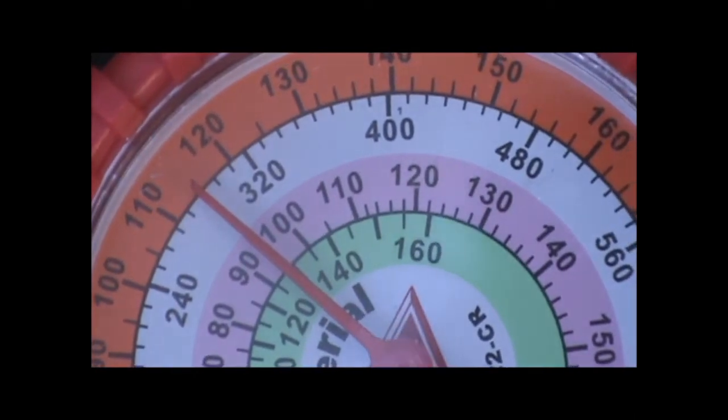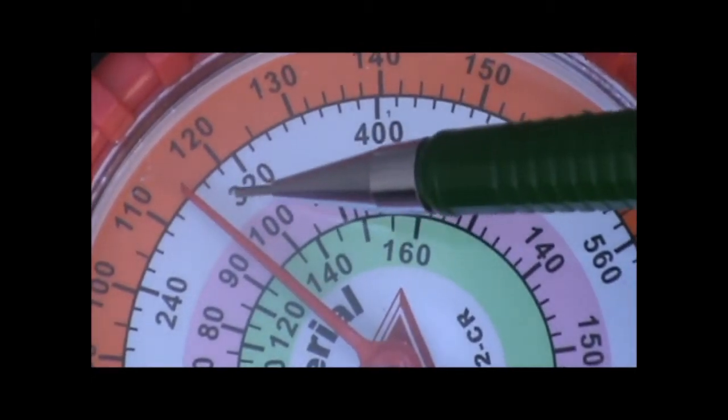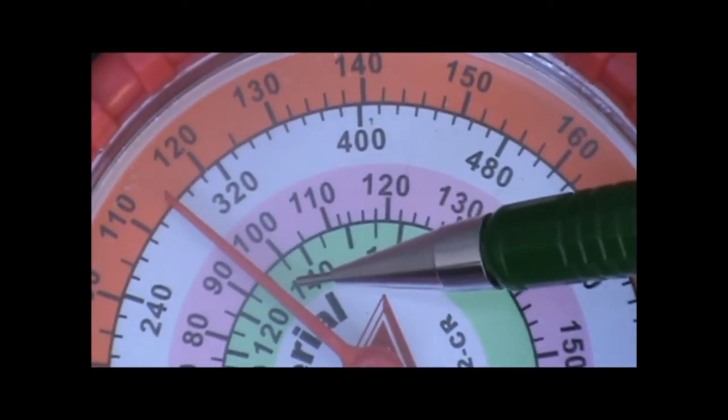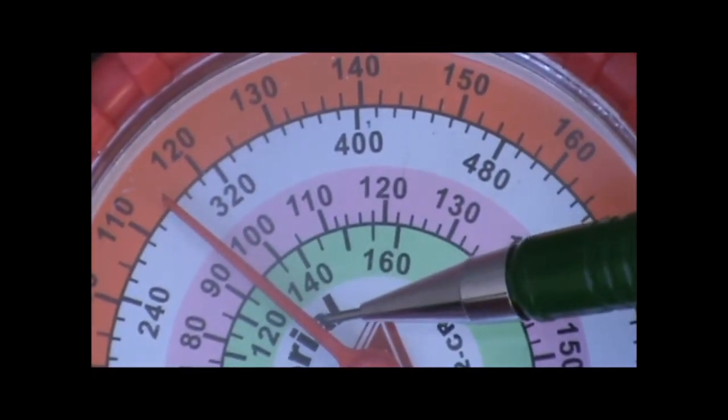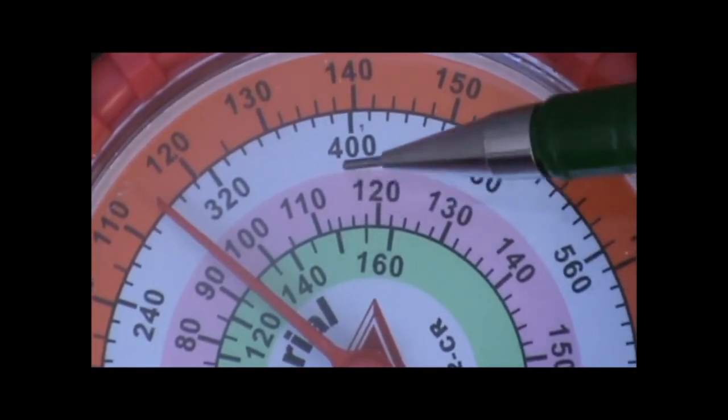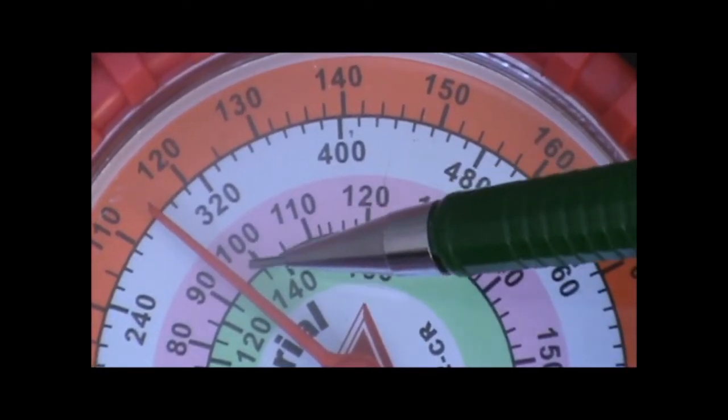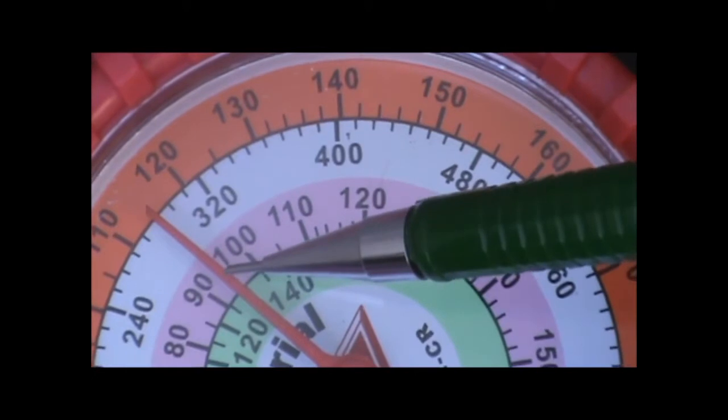Here's our high side pressure gauge. What you're going to want to look at is where the indicator crosses the pink ring so you can read the saturation temperature of the refrigerant. It's crossing at about 93, 94 degrees right there.